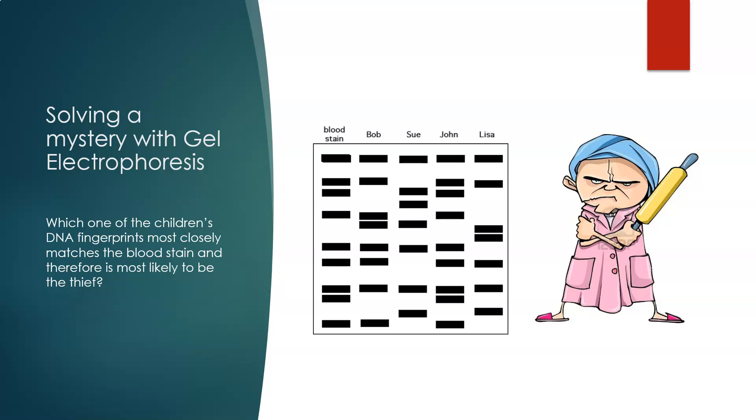Which one of the children's DNA fingerprints is most closely matched to the blood stain and therefore most likely to be the thief? Here we've got the blood stain. Let's look across, and you need to match the most lines to the initial blood stain.